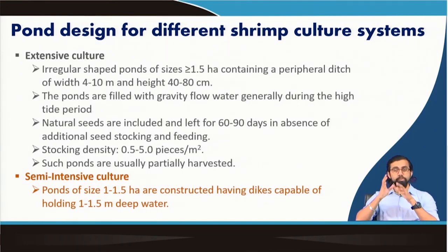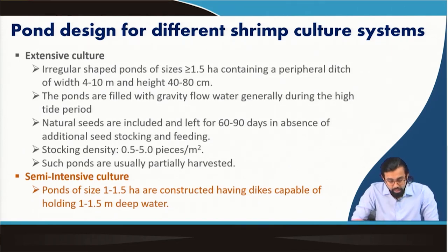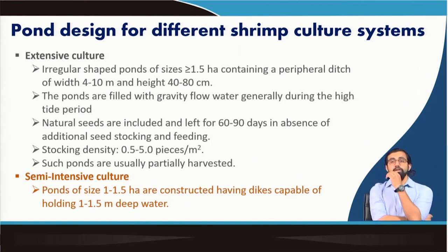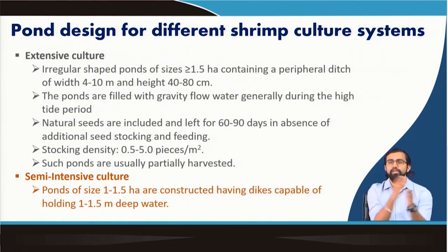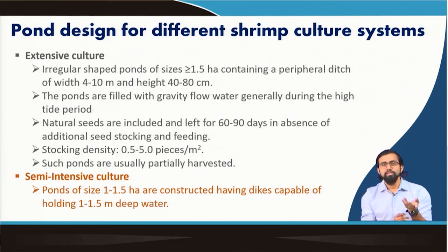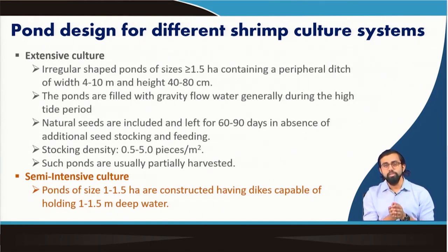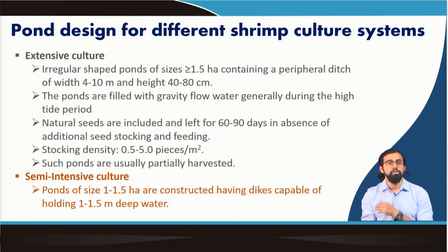When designing a shrimp pond system, the design depends upon the type of shrimp culture system. There are different types: extensive, which requires very little human intervention over a very large area with all natural amenities; semi-intensive; and intensive. The optimum design criteria differ for each of these shrimp culture systems.